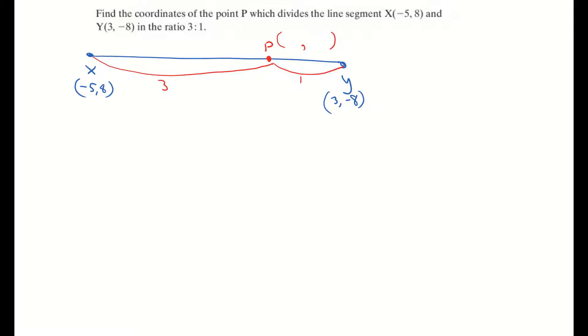So next thing I'm going to do is write down everything that I'm given. So the two coordinates I'm given are (-5, 8) and (3, -8). And I'm given the ratio 3 is to 1. I'm going to label now everything I'm given. X1, Y1, X2, Y2 and my ratio is A is to B. 3 is to 1.